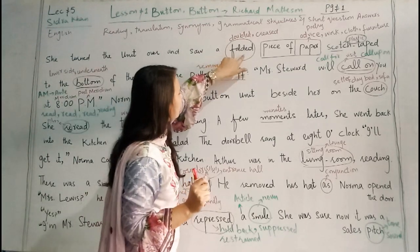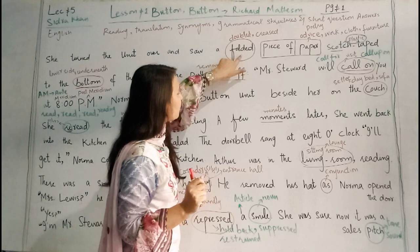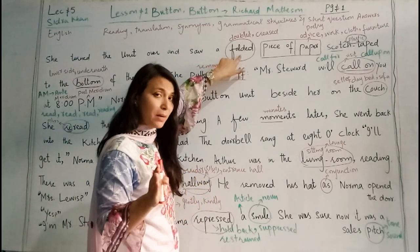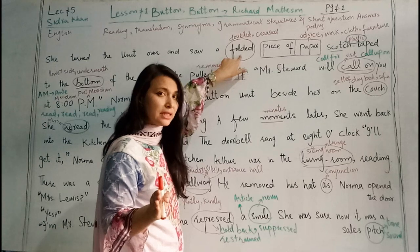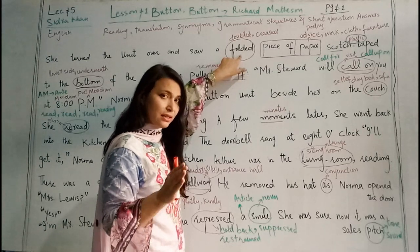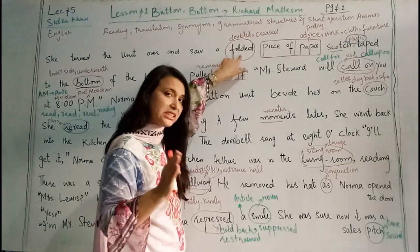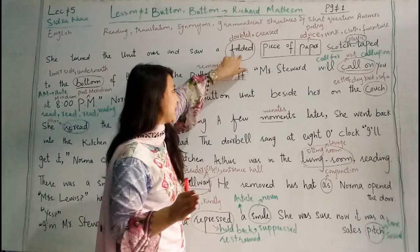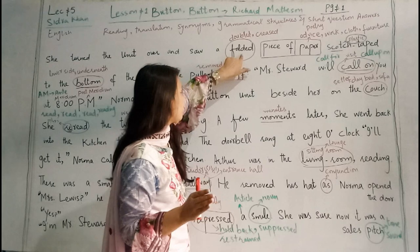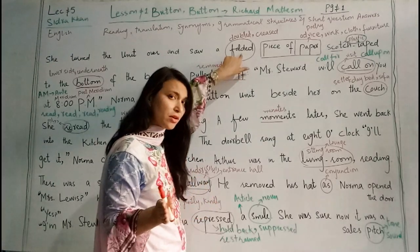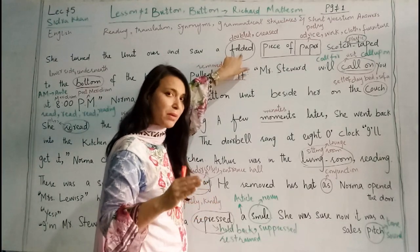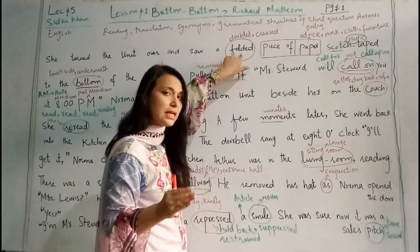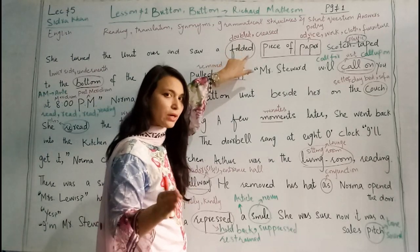A folded — folded means doubled. Now this 'folded' — fold, folded — which is the past participle form, students, the third form, is also used as an adjective. That is used as an adjective. So here 'folded' is the past participle form of 'fold', used as an adjective over here.